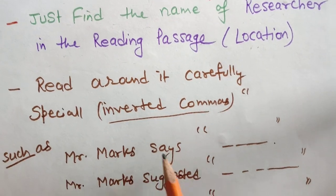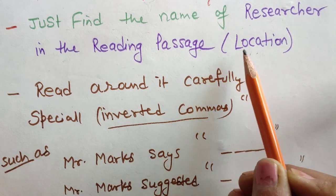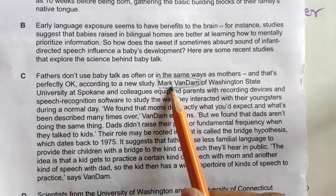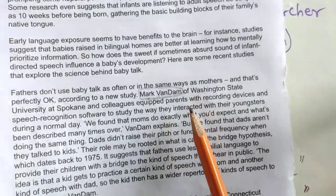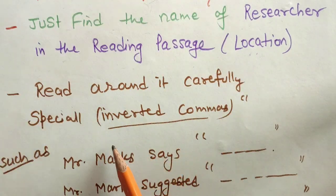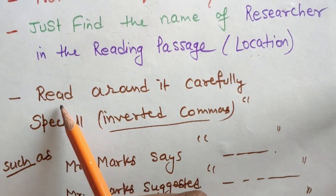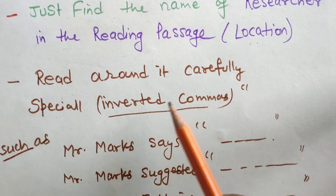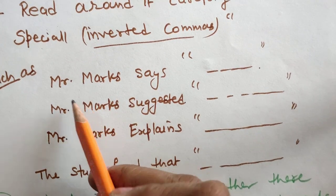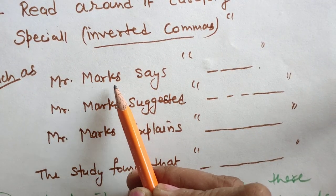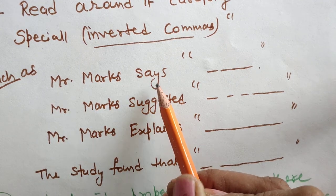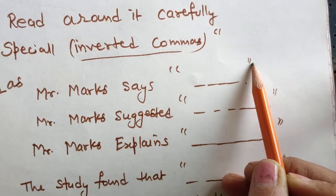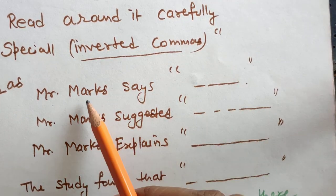The third point is read around it carefully. As I showed you, wherever you find the researcher's name in the paragraph — we found Mr. Mark van Dam in the C paragraph — we will be reading around that name. Now, next is important, especially regarding inverted commas and what the writer is saying.